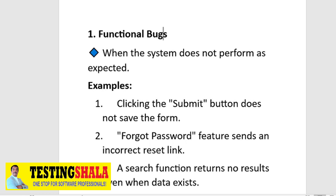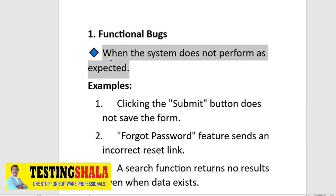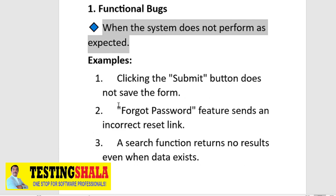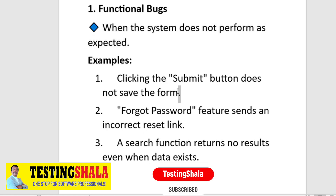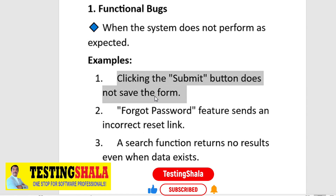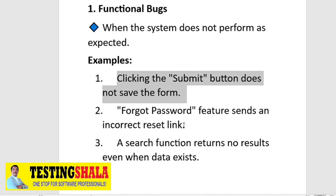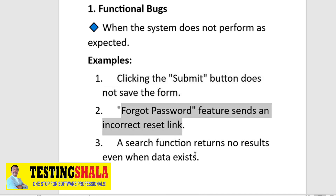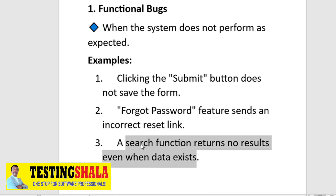The first type of defect which we normally come across is functional bugs. Functional bugs are when the system does not perform as expected. For example, clicking on a submit button does not save the form, forgot password feature sends an incorrect reset link, or search functionality returns no results when data exists. That is when we categorize those bugs as functional bugs.